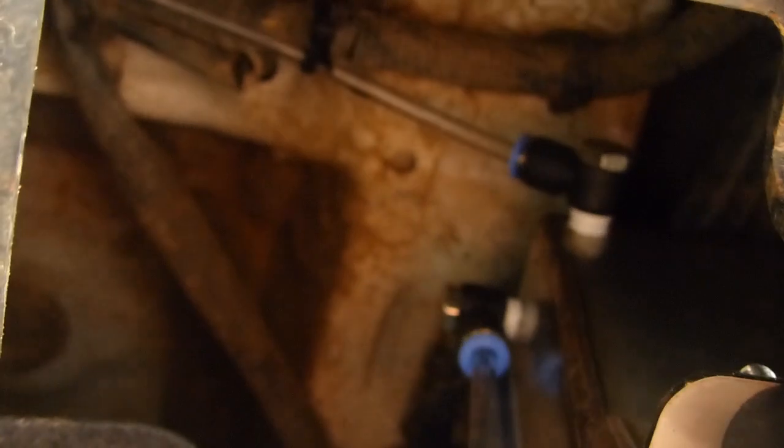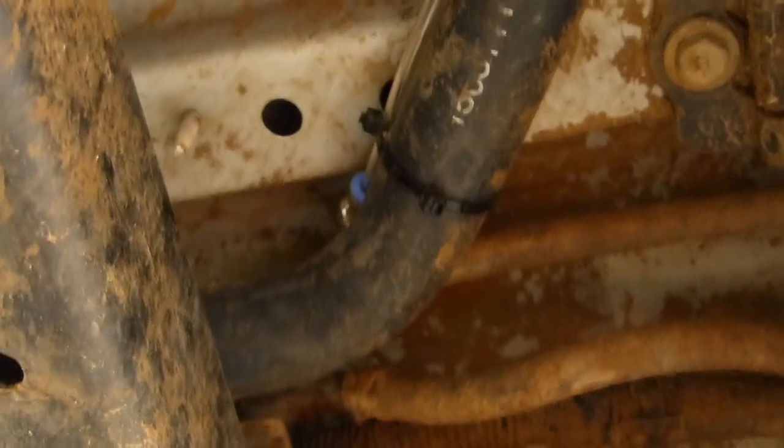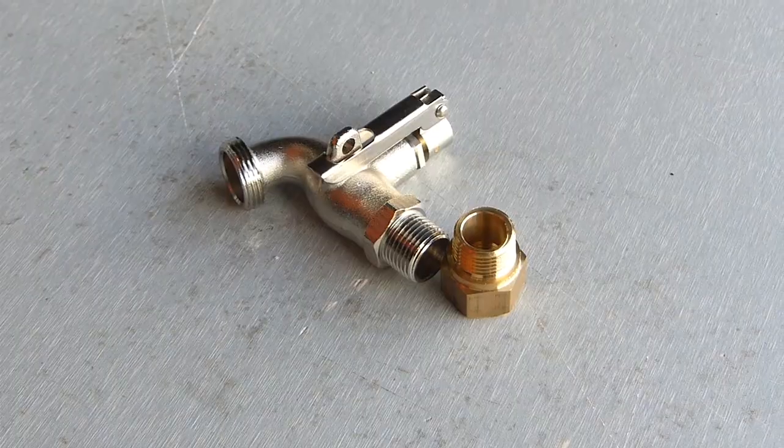Attach the breather lines to the top of the tank. You can see the breather line there. Just run the breather lines to a point as high as you can on the vehicle. I've run it along that fuel filler, and you can see it up the top there. Do the same on the other side.